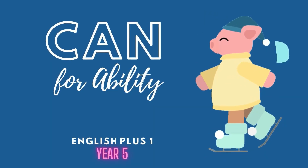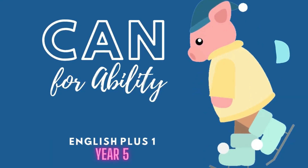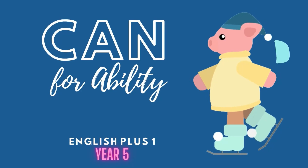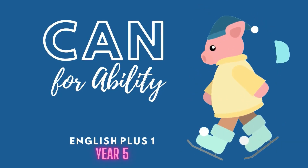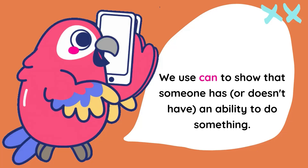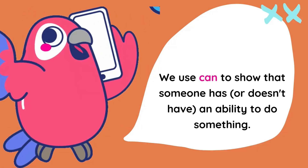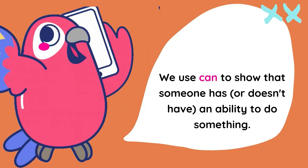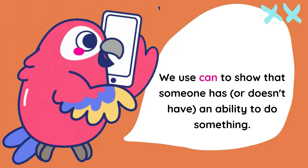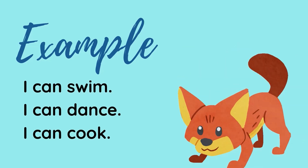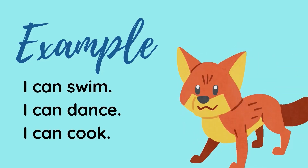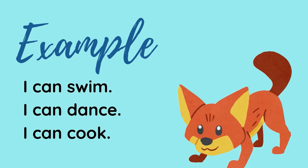Can for ability. English Plus One, Year Five. We use can to show that someone has or doesn't have an ability to do something. For example: I can swim, I can dance, I can cook.